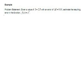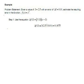Example. Problem statement: Given a value of x-bar equals 2.5 with an error of 0.01, estimate the resulting error in the function f of x equals x-cube. Step 1: Use the equation, which yields delta f of x-bar equals 3 times 2.5 squared times 0.01 equals 0.1875.